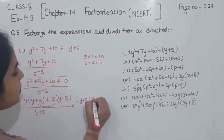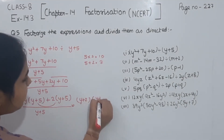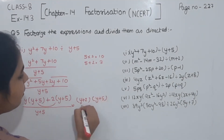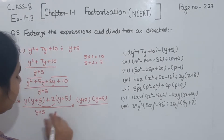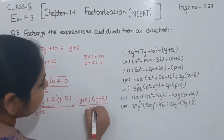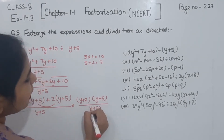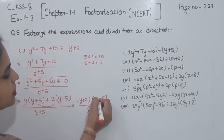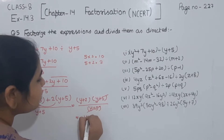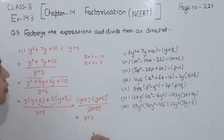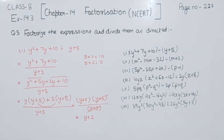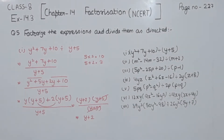And this one we are having is y plus 5. In the denominator we are having y plus 5. Now y plus 5 is cancelled from y plus 5. So we are having the solution for part 1 as y plus 2.